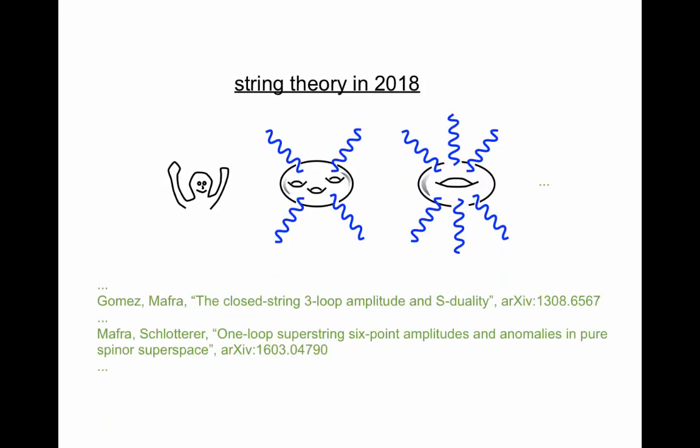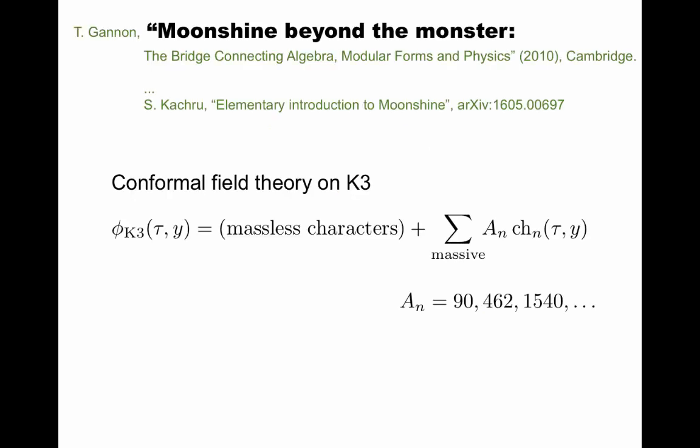What is happening now? Now, the three-loop amplitude in string theory was first computed a few years ago. The six-point amplitude was very well understood in this paper. But I would say there's still a lot of interesting questions about scattering amplitudes in recent work. One example is Moonshine Beyond the Monster by Terry Gannon, a mathematician. And this is nicely reviewed by Shamit Kachru, a physicist.